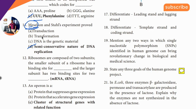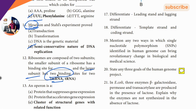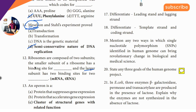Next: ribosomes. Smaller subunit binds mRNA, larger subunit has two binding sites. So smaller subunit binds mRNA, larger subunit binds tRNA. The answer is mRNA for smaller subunit.